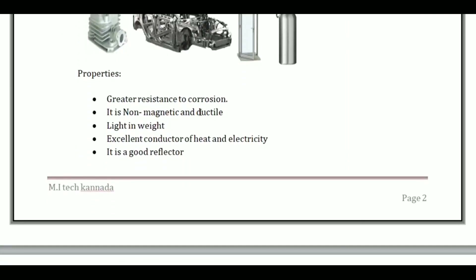Properties of aluminum: greater resistance to corrosion, non-magnetic, ductile, light in weight, excellent conductor of heat and electricity, and good reflector.